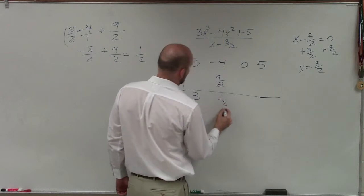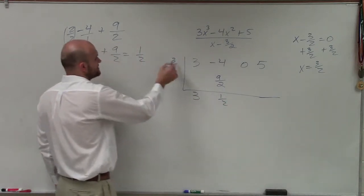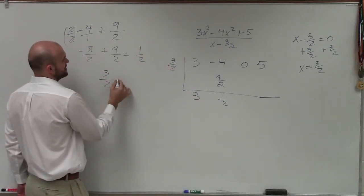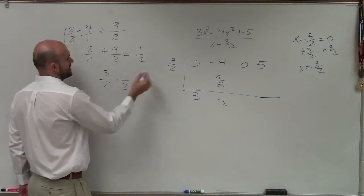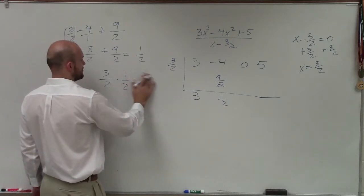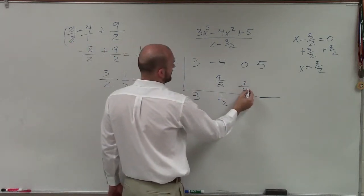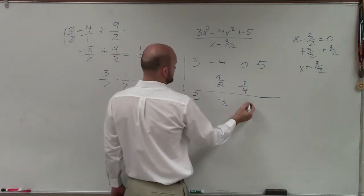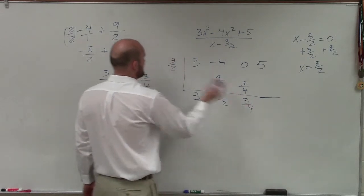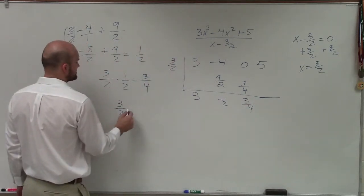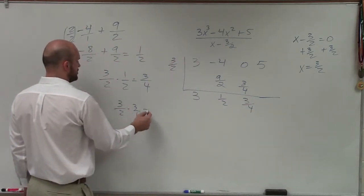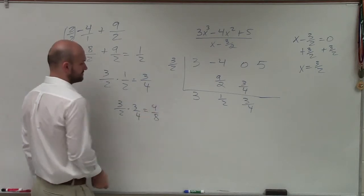So I bring down 1/2. Then I multiply 1/2 times 3/2. Remember when you multiply fractions, you just multiply across, which is 3/4. Okay? So that becomes 3/4. Zero plus 3/4 is going to become 3/4. Then I multiply again, so I have 3/2 times 3/4, which equals 9/8.